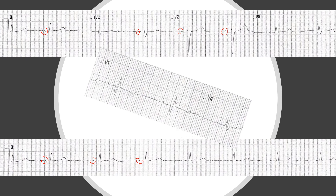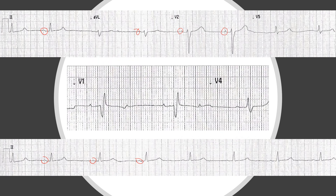But if we look at lead V1, we notice it is not just one P wave — there is what looks like another one before each complex. If you map this out, you'll find that they map perfectly, which means this is actually not first degree heart block. This is a second degree heart block, which will completely change your management plan.